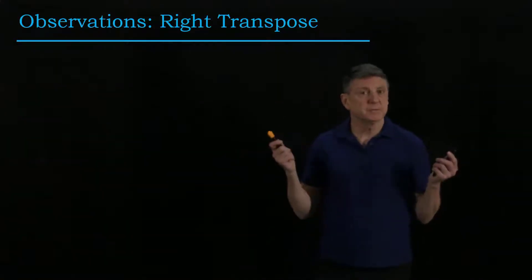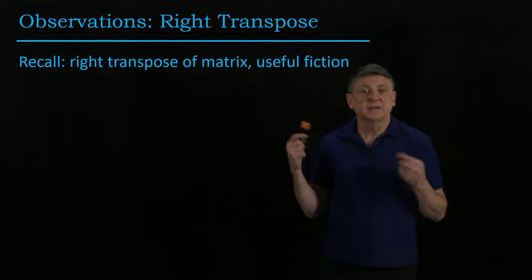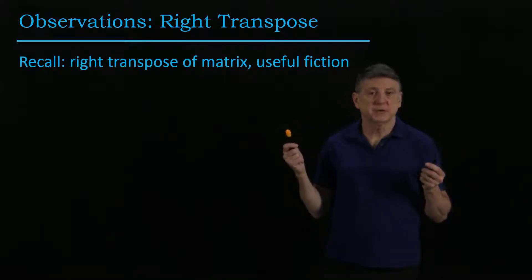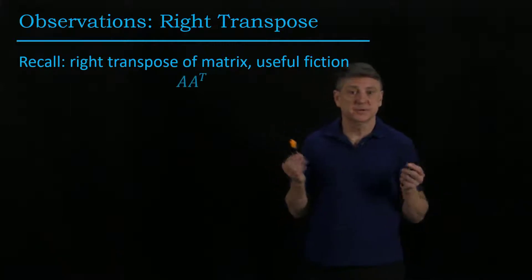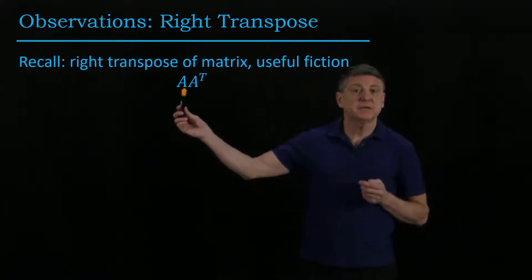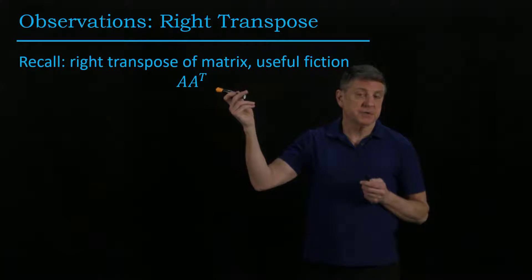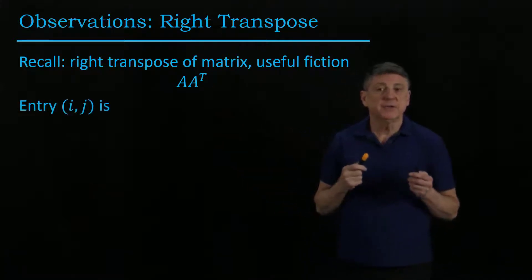So let's make some observations about observations. And let's recall the right transpose of a matrix. For mathematics, this is fine. For data, it's a useful fiction that we'll employ. And that is, we could take a data matrix and then we could multiply it by its transpose. And if we do that.